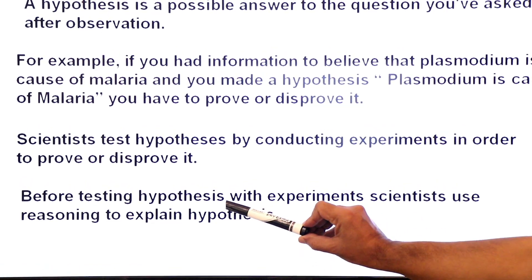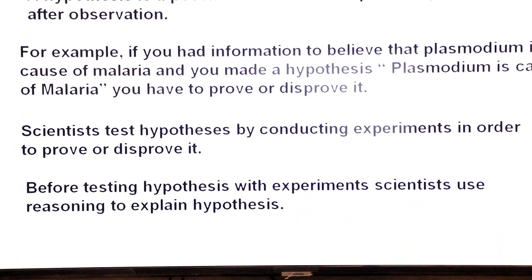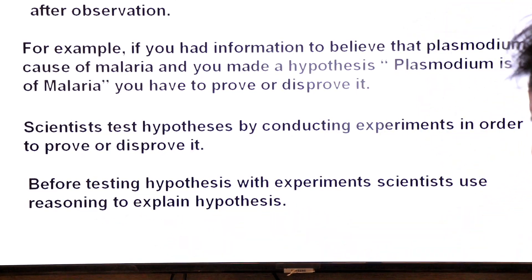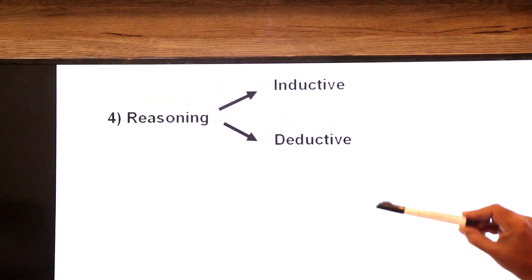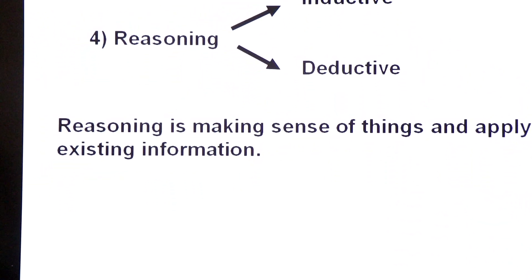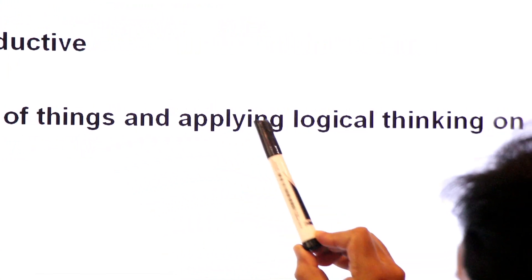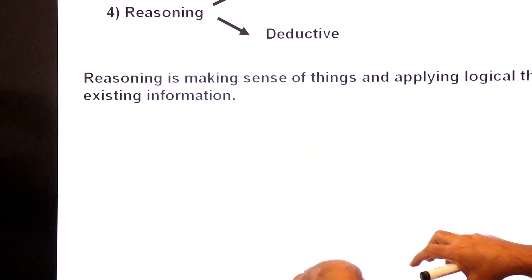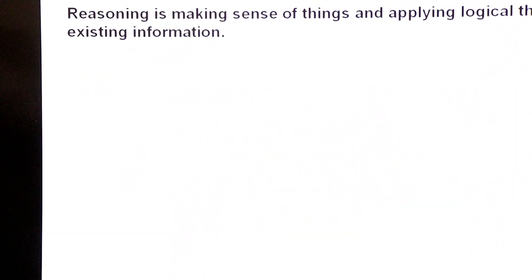Before testing a hypothesis with experiments, scientists use reasoning — also called logical thinking. Reasoning is making sense of things and applying logical thinking on existing information. Logical thinking is a process that involves moving from one related statement to another. Scientists use reasoning to explain the hypothesis.